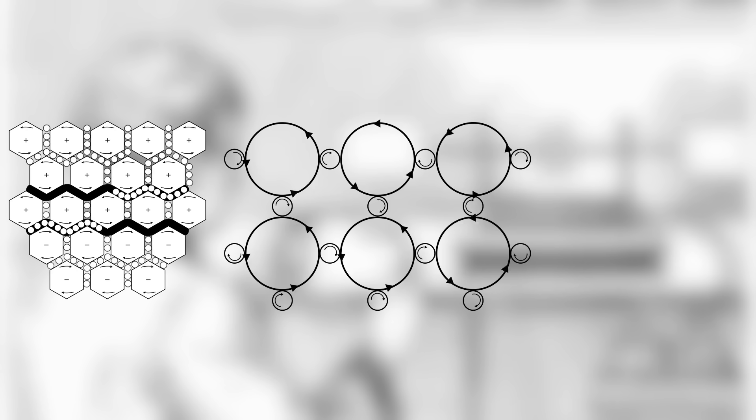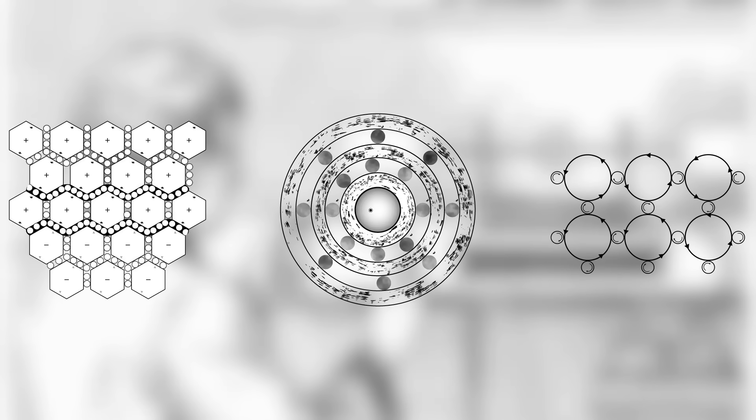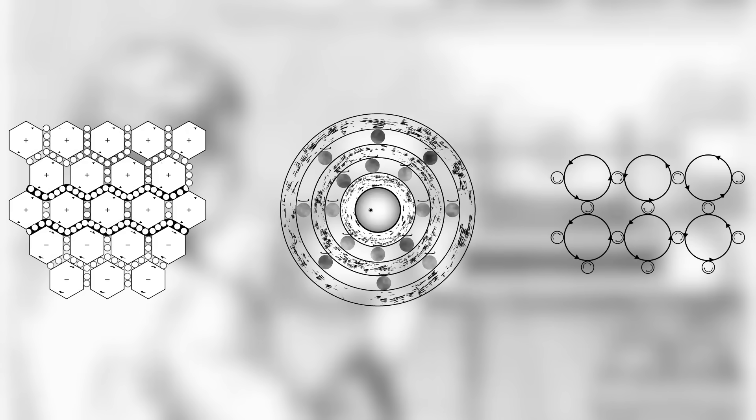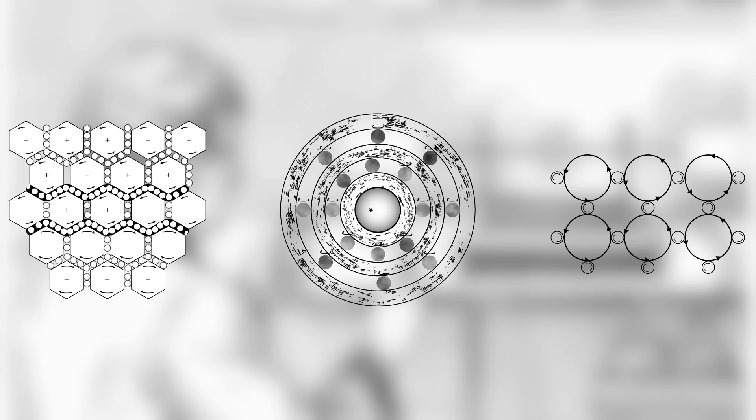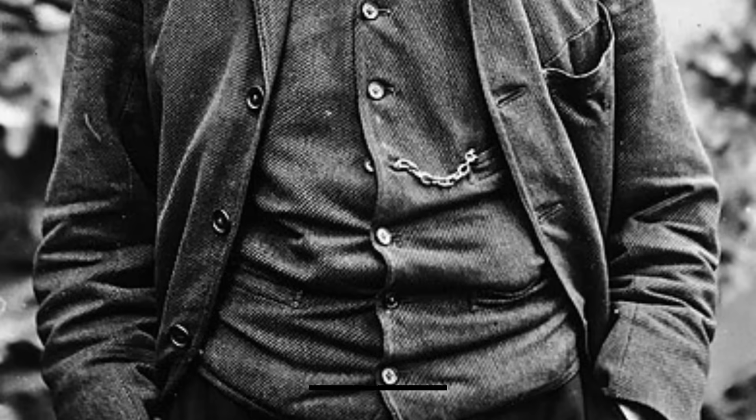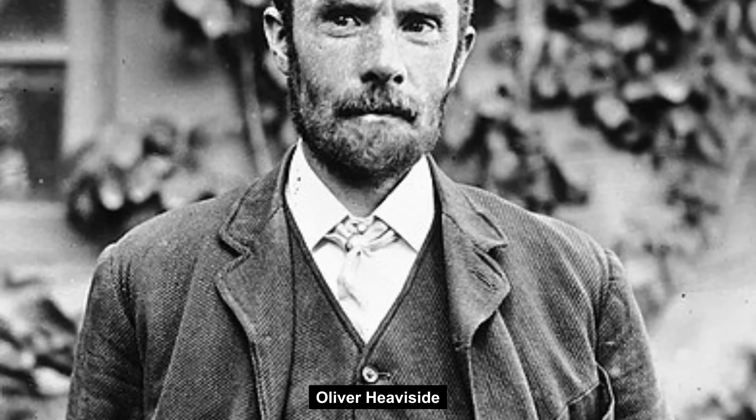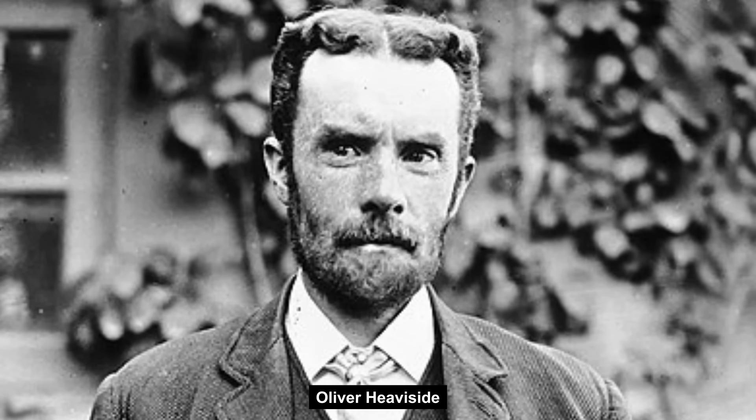Maxwell's model was an extreme example of model building in theoretical physics. Maxwell originally expressed his electromagnetic theory in a complex system of 20 equations with 20 variables presented in component form. Oliver Heaviside and Gibbs later cleaned it and presented these into the four elegant vector equations we recognize now.